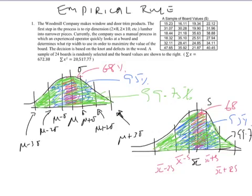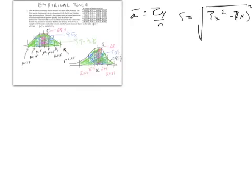Now let's demonstrate this by working this sample problem. First thing we need to do is to calculate the sample mean and sample standard deviation for this data. x-bar is equal to the sum of x over n and s is equal to the square root of the sum of x squared minus the sum of x all squared over n divided by n minus 1. When you substitute the values that you have, we gave you the sum of the x's is equal to 672.38 and the sum of the x squared is 20,517.77. Turns out the sample mean is 28.02 and the sample standard deviation is 8.55.